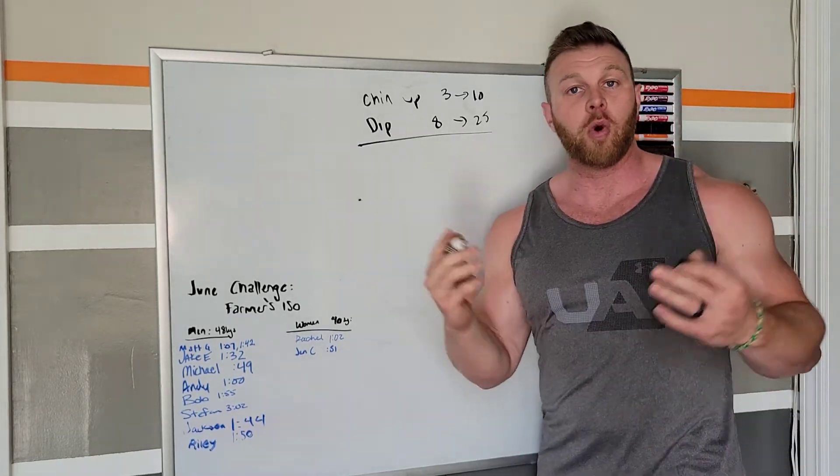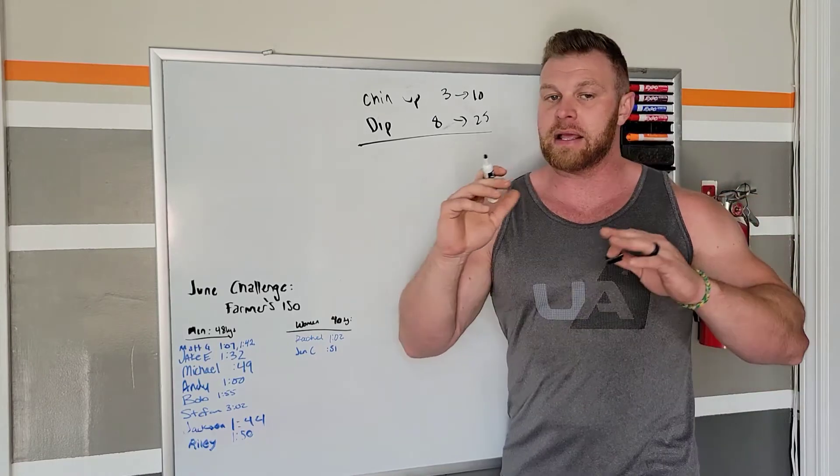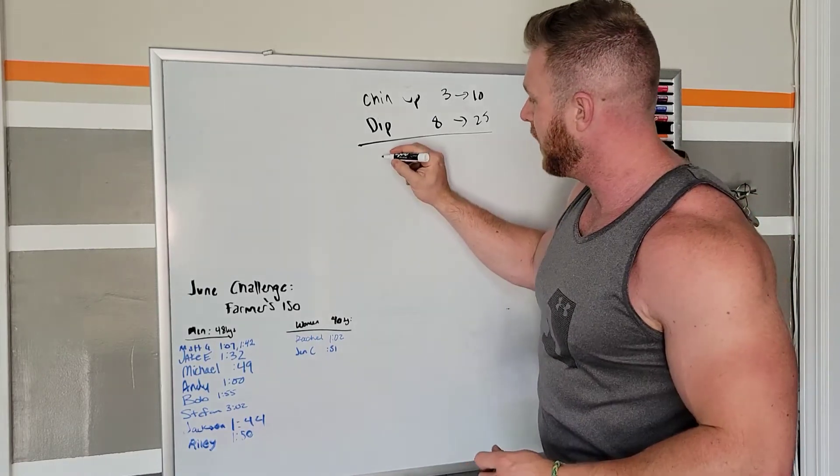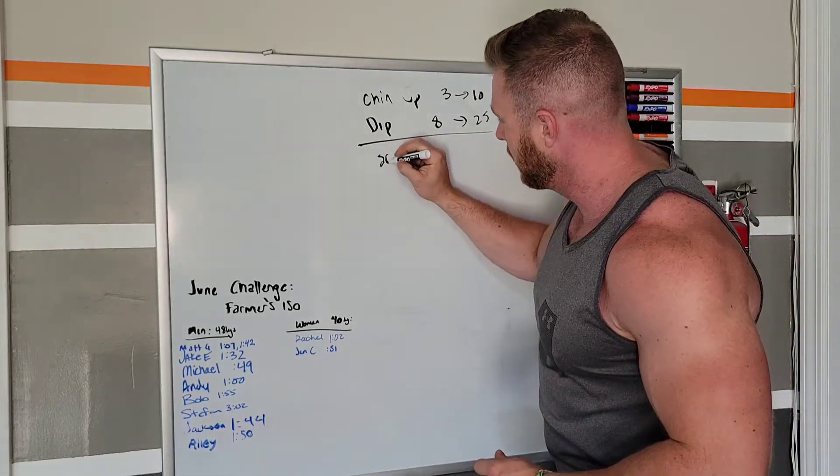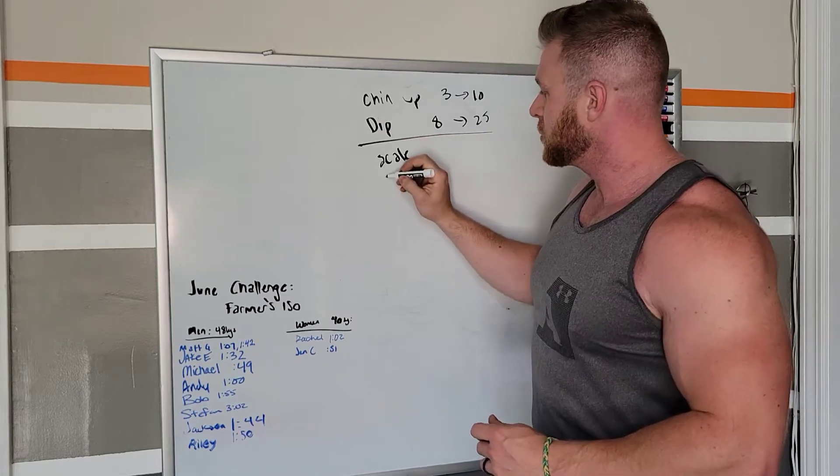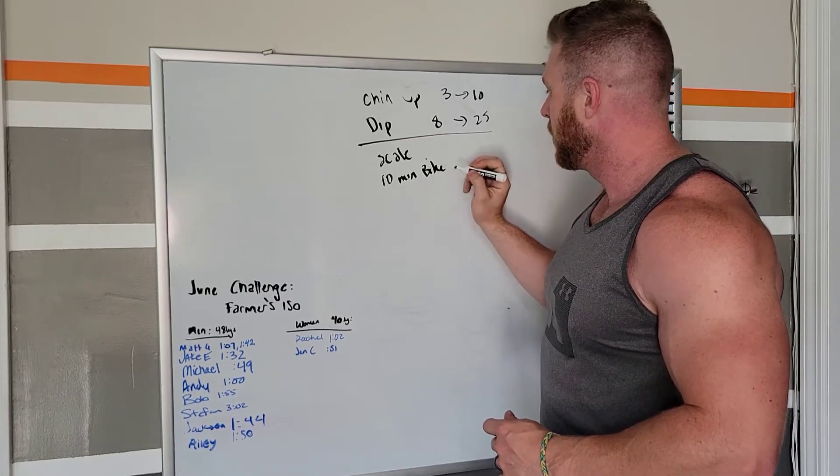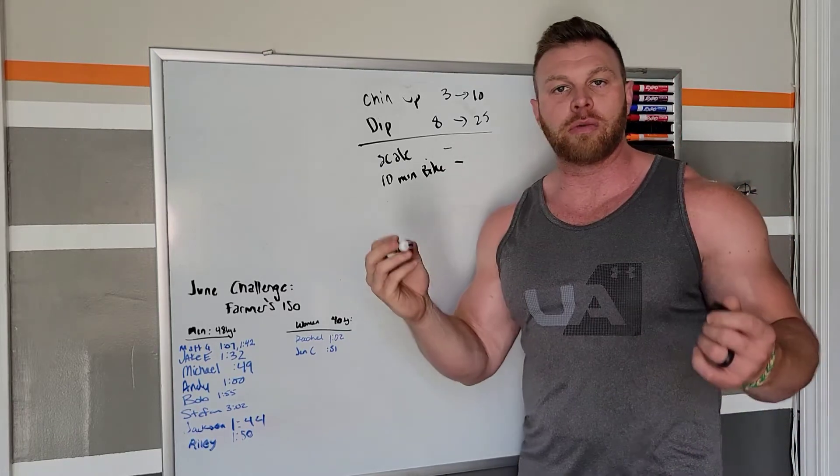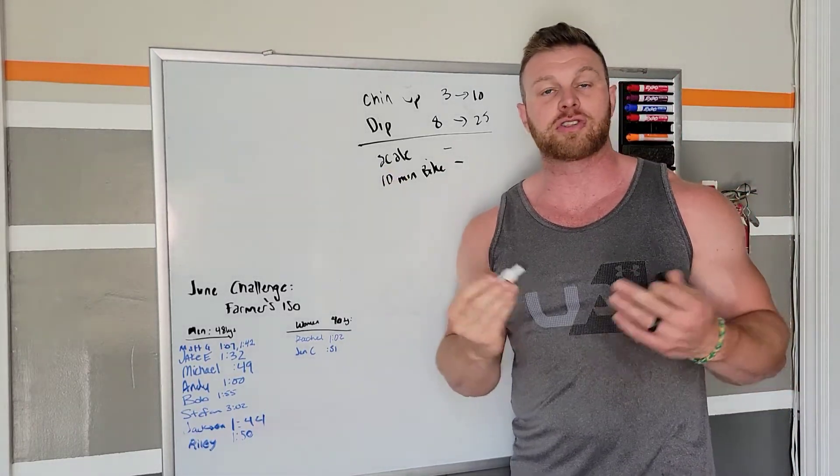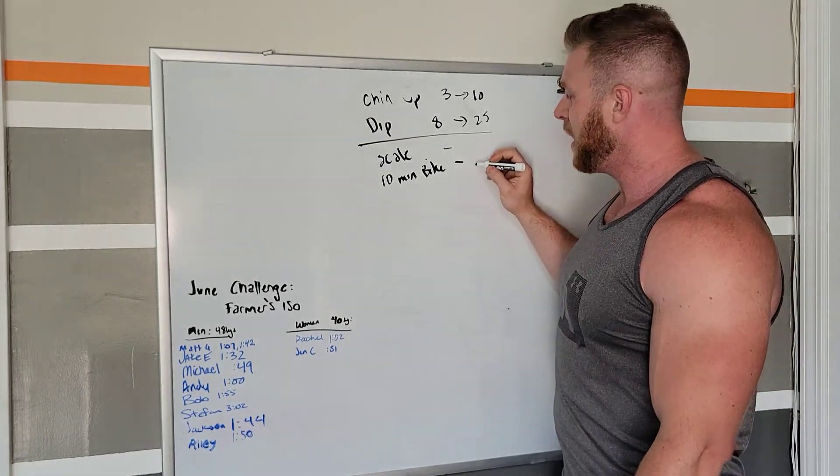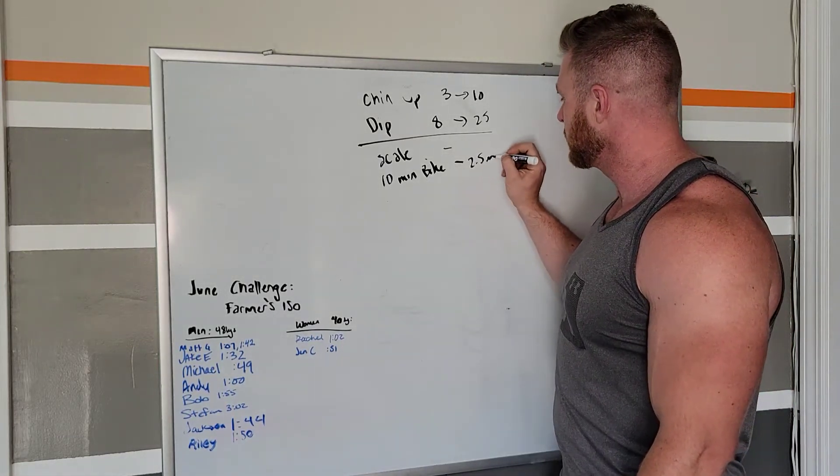That's an easy one. Maybe we're going to go for weight loss. Instead of just using the scale, we have our scale weight. We can also do a 10-minute bike. So our scale number isn't our only number. Maybe our goal is to lose 20 pounds. But in the process, a 10-minute bike, you might only get 2.5 miles.